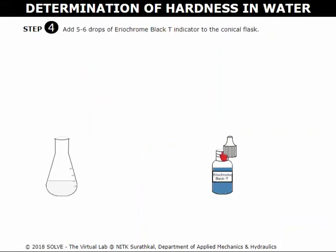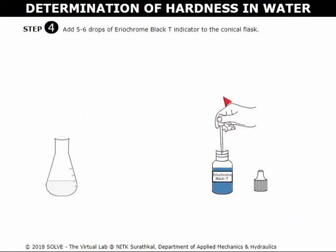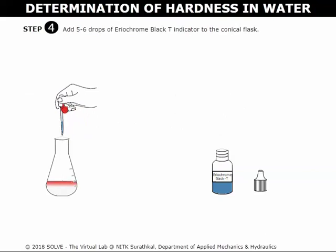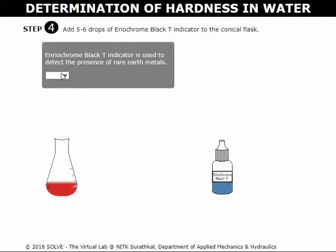Click here to open the lid of Eriochrome Black T indicator. Click on the dropper to collect the indicator. Click here to add 5 to 6 drops of indicator into the conical flask. Close the lid. Select the correct answer to this pop-up question to proceed to the next step.